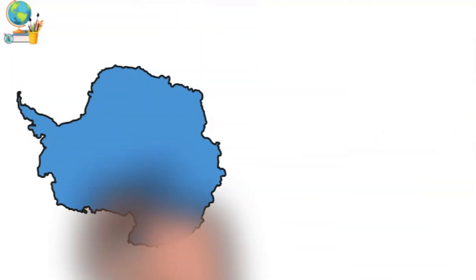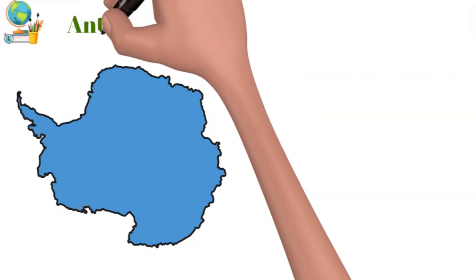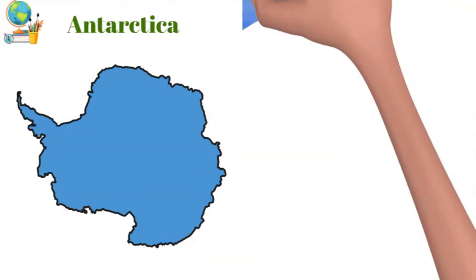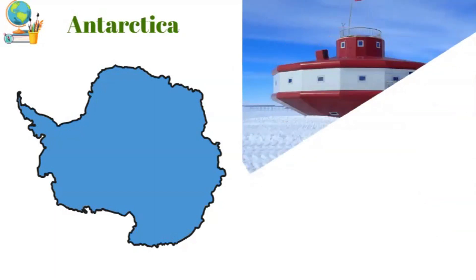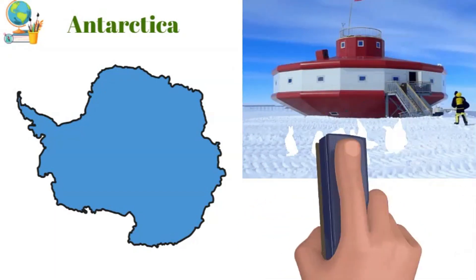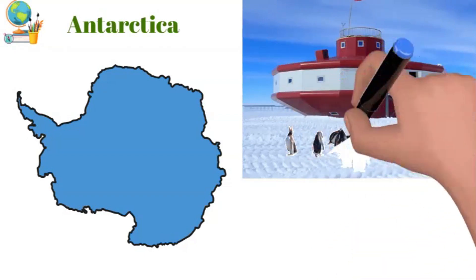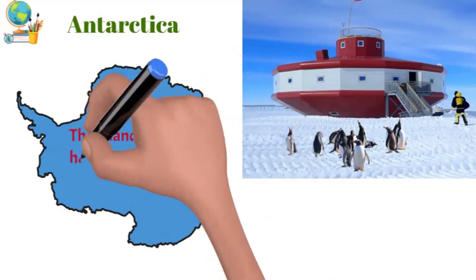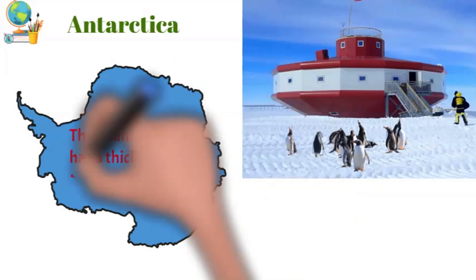Number seven: Antarctica. Antarctica is an ice-covered continent surrounded by the Southern Ocean. Almost all of the continent's land is covered by a thick layer of ice. On average the ice is 1.9 kilometers, 6,200 feet deep. The inland ice sheet has a thickness of up to 4 kilometers, 13,000 feet.